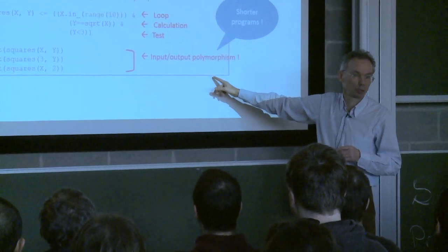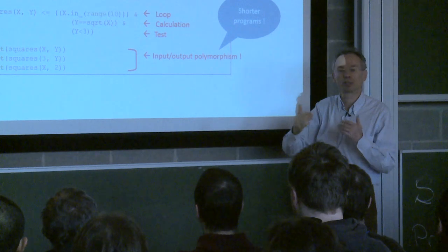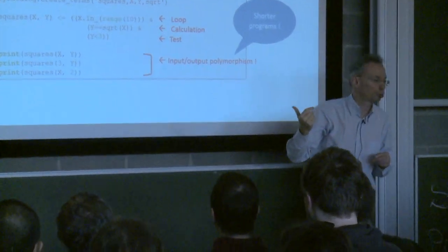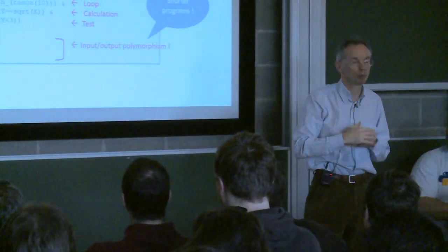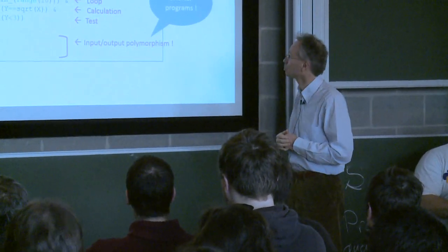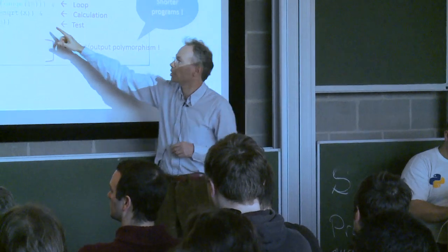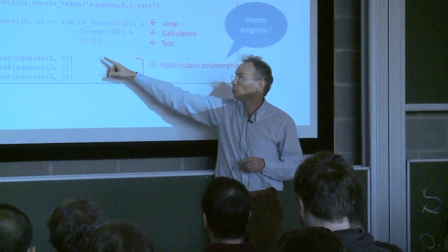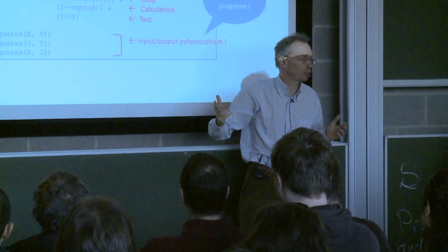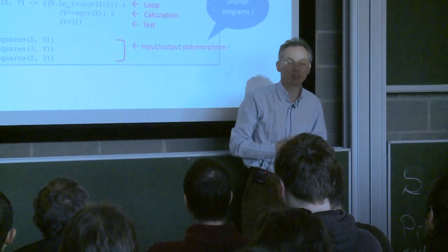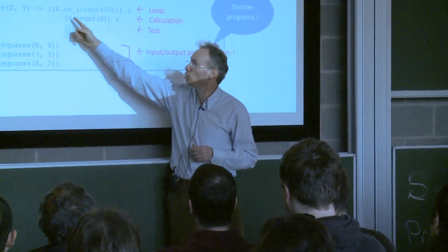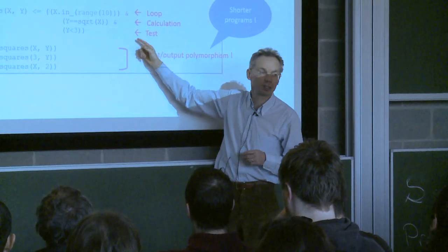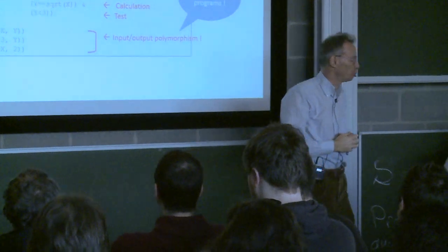And with the same sentence, you have the same clause. You can use the same logic in many different ways. That's what I call input-output polymorphism. And that makes, again, your program shorter because you don't have to write the equivalent of this depending on whether x is an input or y is an input. The program will do it for you. So that makes for shorter programs. You can also recognize here that this is typically a loop. That would be a calculation. This is a test. So with this, you have the basic of any language.